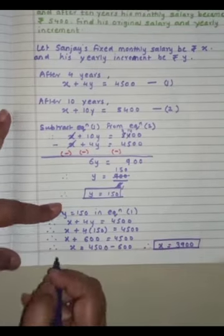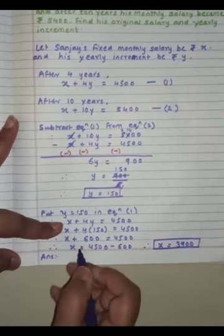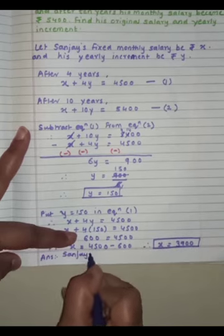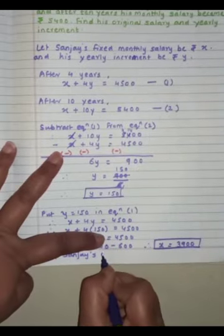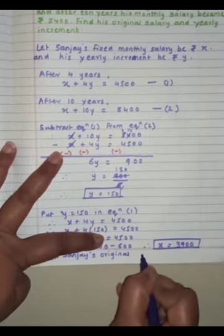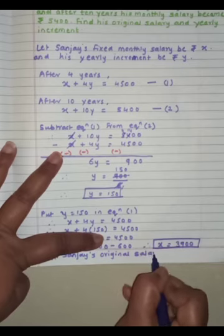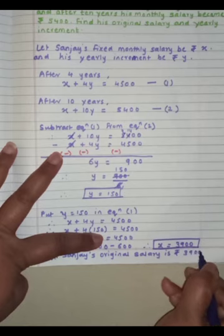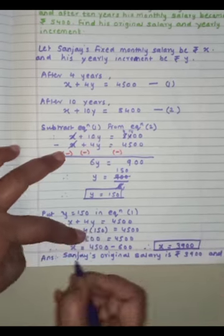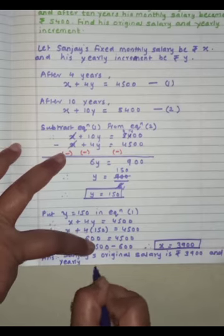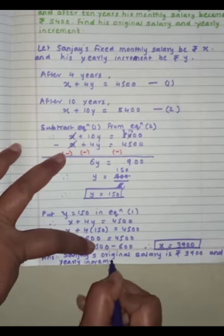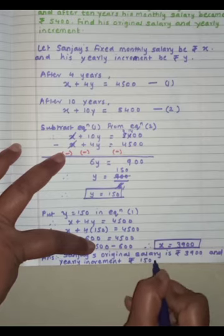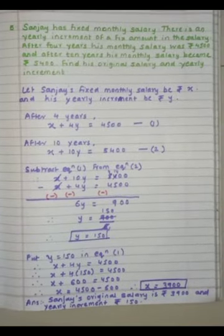So our final answer: Sanjay's original salary, which we assume X, original salary is rupees 3900 and yearly increment, which we assume Y, rupees 150.